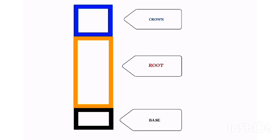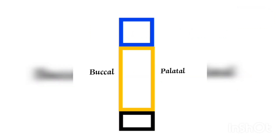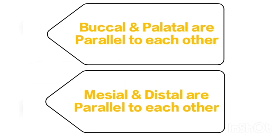Dividing the wax block as crown, root and base. Crown measures about 7.5 mm and root measures about 13 mm. It has buccal, palatal, mesial and distal surfaces. Buccal and palatal are always parallel to each other. Similarly, mesial and distal are always parallel to each other.